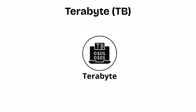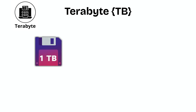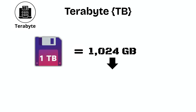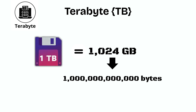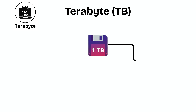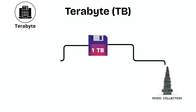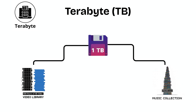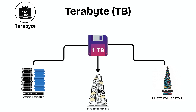Terabyte (TB). A terabyte is 1,024 GB, or a trillion bytes. With 1 terabyte, you could store around 250,000 songs, 500 hours of HD video, or millions of documents.